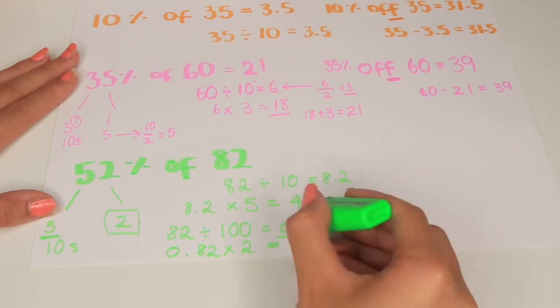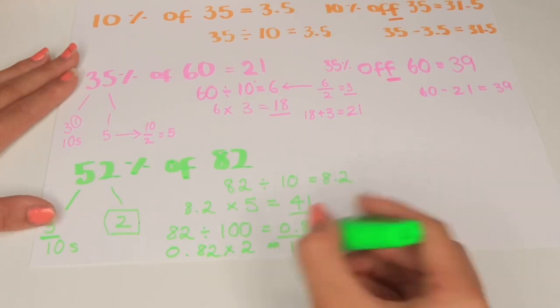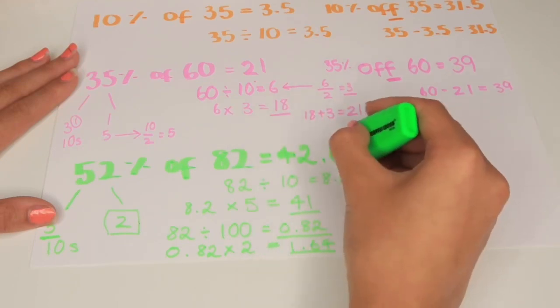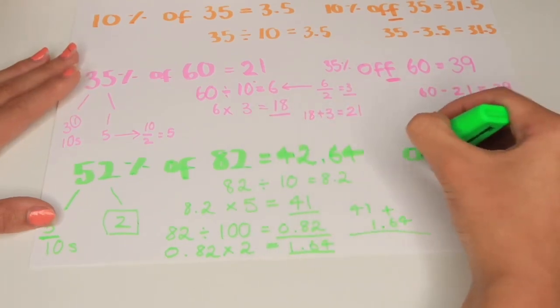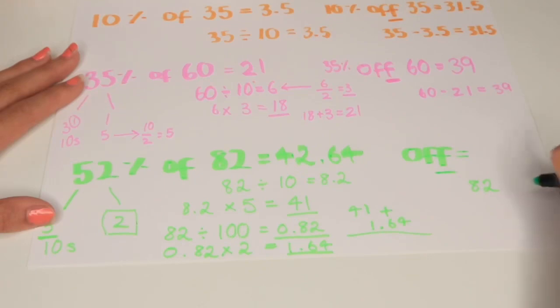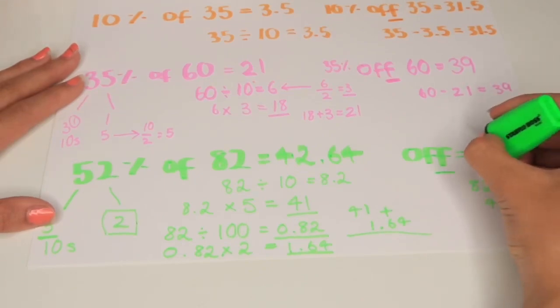We know what 50% is and what 2% is. We add these together to get 42.64. So now if the question is asking what 52% off of 82 is, we do 82 minus 42.64 which is 39.36.